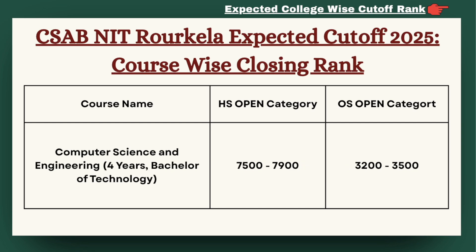Next we have Computer Science and Engineering. Candidates need to have a rank range between 7,500 to 7,900 for HS category to get admission. For OS category, the cutoff can be expected between 32,000 to 35,000.